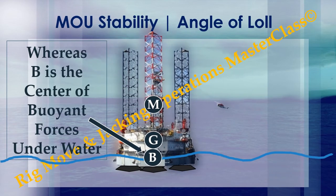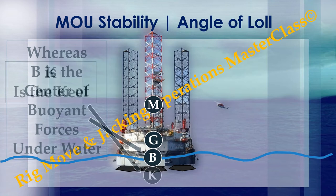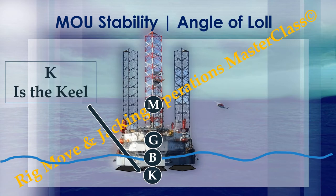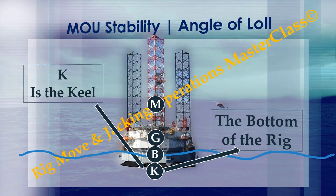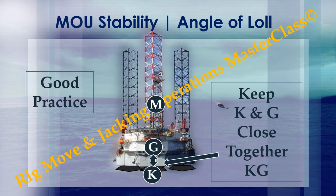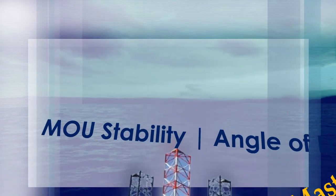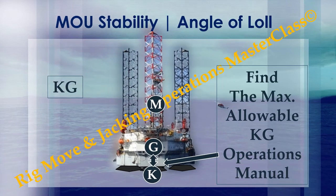B is the center of buoyant forces, below the water line. K is the keel — the bottom of the rig. Good practice: keep K and G close together. KG — find the maximum allowable KG in the operations manual.